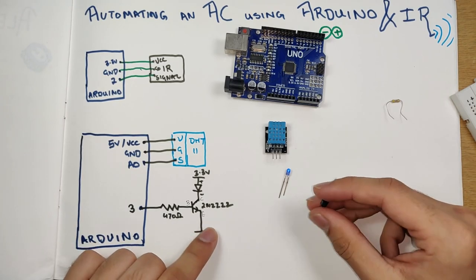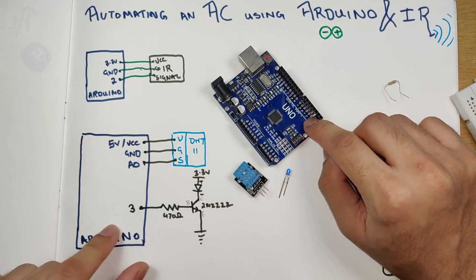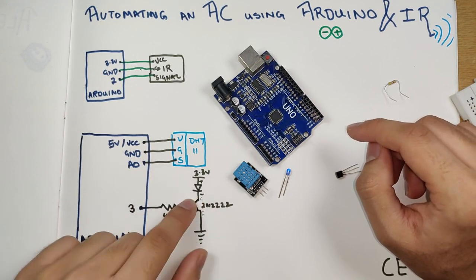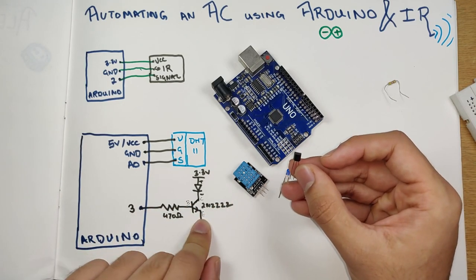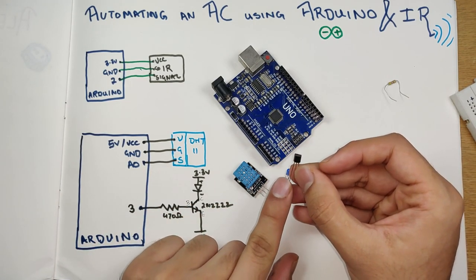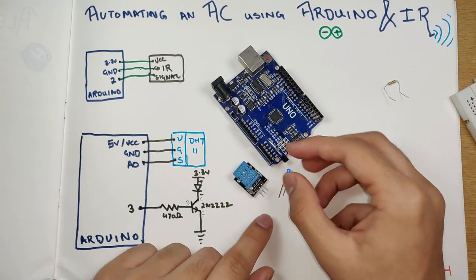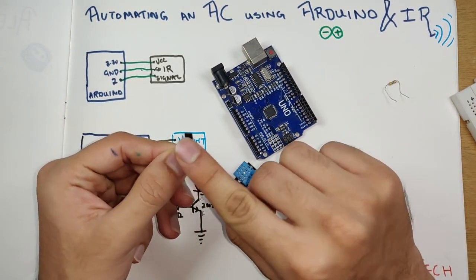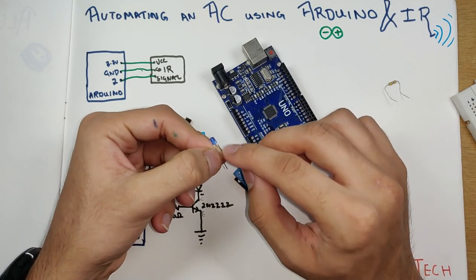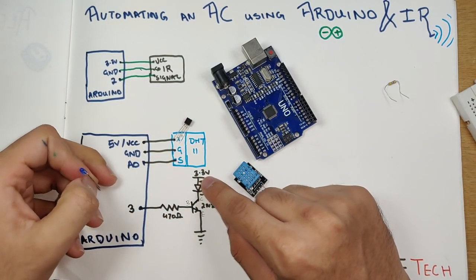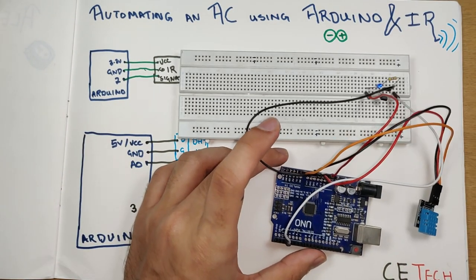Digital pin 3 connects through a 470 ohm resistor to the base of the 2N2222 transistor. The emitter — the leftmost pin when looking at the curved side — goes to ground. The base is the middle pin connecting to the resistor. The collector — the rightmost pin — goes to the negative terminal of the IR LED. The LED's positive longer leg connects to 3.3V or 5V.